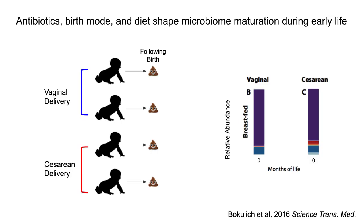Compared to vaginally born infants, cesarean-delivered infants showed significantly greater phylogenetic diversity, richness, and evenness at baseline. With this method you may suspect from the relative abundances that delivery mode has statistically significant but rather small effects on the infant gut microbiome.